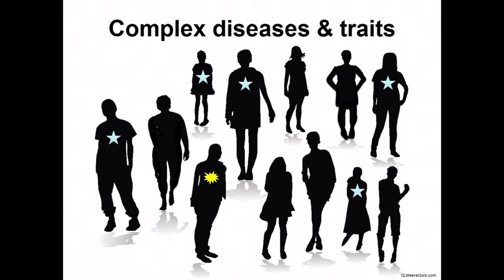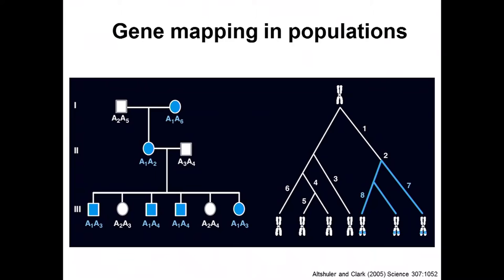Today we'll talk largely about variants that are common in populations, such as those blue stars, and towards the end talk more about identifying variants that are lower frequency or rare in populations and how they contribute to complex disease, as shown by that yellow star.